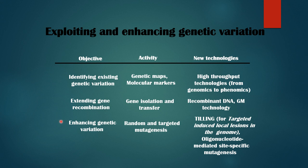The third objective is enhancing the genetic variation. To complete this objective, we use random and targeted mutagenesis. The technology used is TILLING — Targeted Induced Local Lesion In the Genome — where oligonucleotide-mediated site-specific mutagenesis is employed.